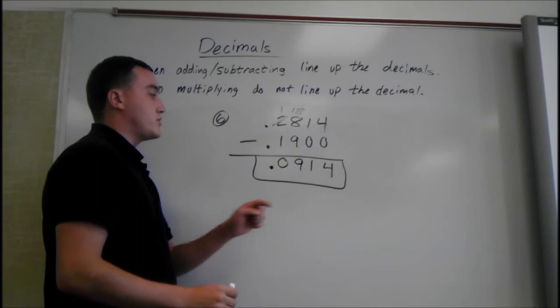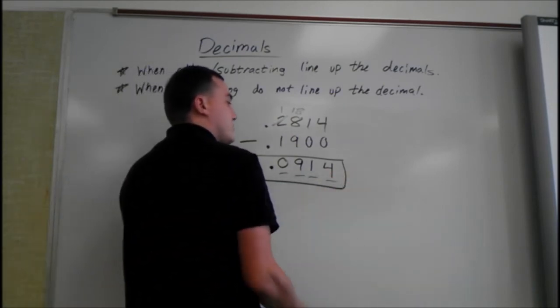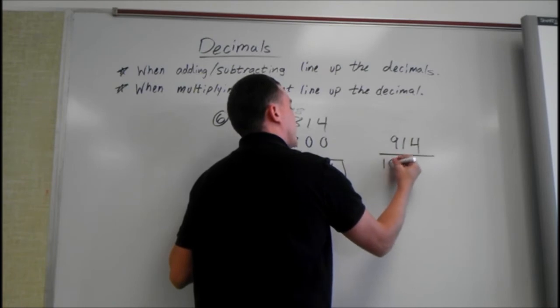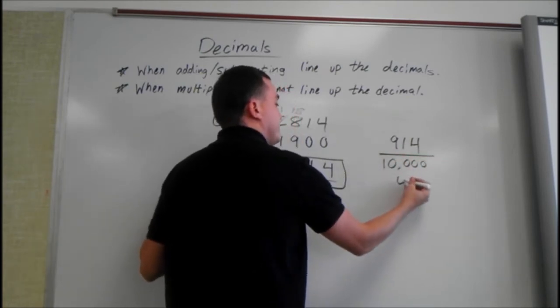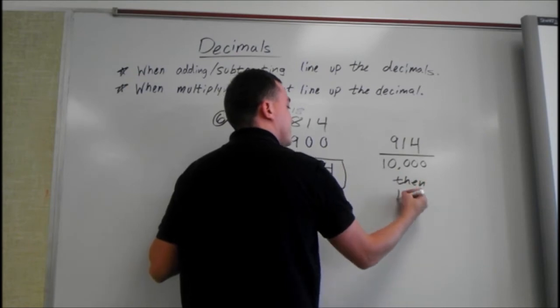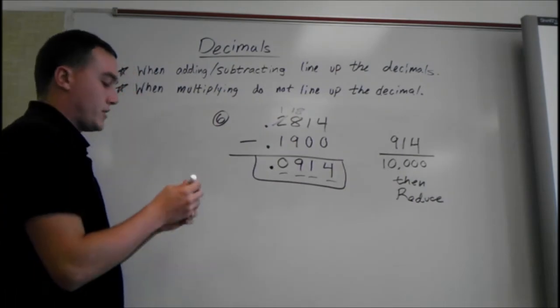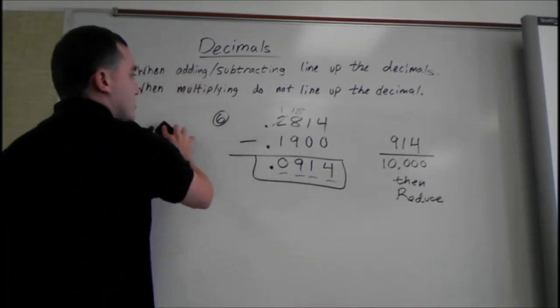And if we did want to reduce this to a fraction, we know this is tens, hundreds, thousands, ten thousands place. So we can put 914 over 10,000. And then we would reduce. We could reduce by 2, but I'm not going to. I already showed you guys how to do that.